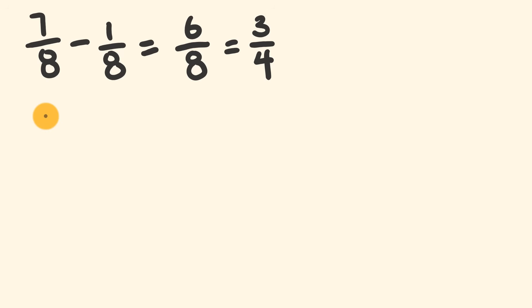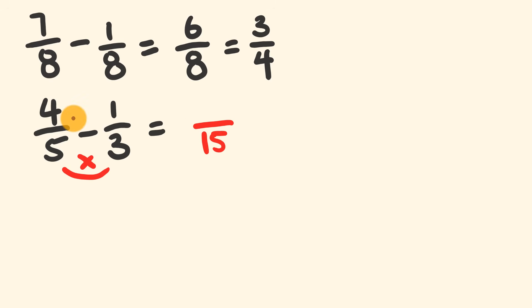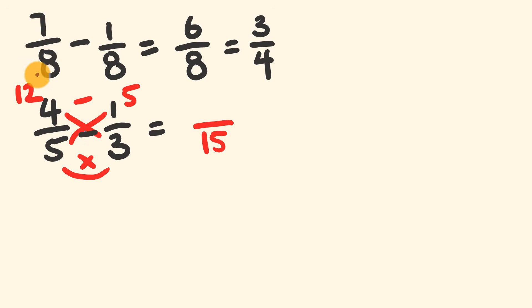What about different denominators in subtraction? Say 4 over 5 minus 1 third. To get the denominator, we multiply: 5 times 3 equals 15. Then cross-multiply: 4 times 3 equals 12, and 1 times 5 equals 5. We are subtracting, so 12 subtract 5 gives us 7. Our answer is 7 over 15.